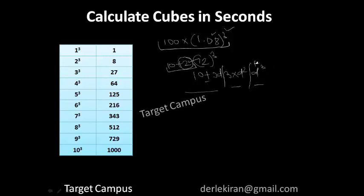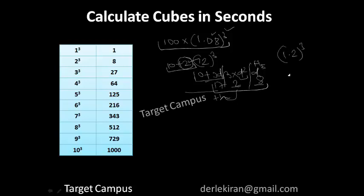Difference is plus 2. Plus 2 cubed is 8, so we write 8 in the first position. Difference squared is 2² = 4; 4 into 3 is 12. We write only the single digit 2, and 1 is carried. Then 3 into difference is 3 into 2 = 6; 10 plus 6 is 16; 16 plus 1 carried is 17. So the answer is 1, 7, 2, 8. If someone asks what is 1.2 cubed, you can simply write 1.728.